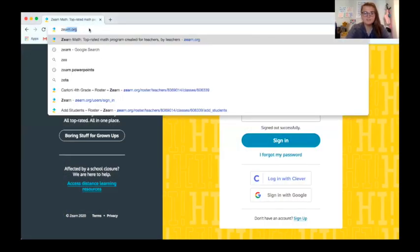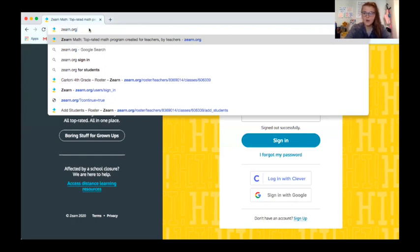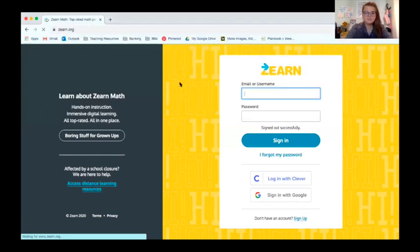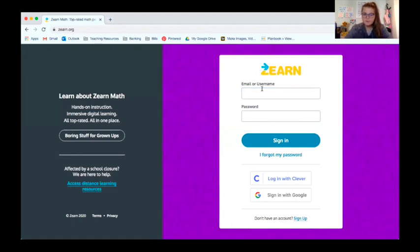I'm going to share my screen and we're going to get started. So you'll start by going to zurn.org, Z-E-A-R-N.O-R-G. And username will be your first name plus your last four digits of that eight digit ID number. So if my first name was Carloni, I would put Carloni. If my eight digit ID number was 1, 2, 3, 4, 5, 6, 7, 8, I would do the last four digits: 5, 6, 7, 8. Everybody's password is Wildcats, W-I-L-D-C-A-T-S, no capitals.